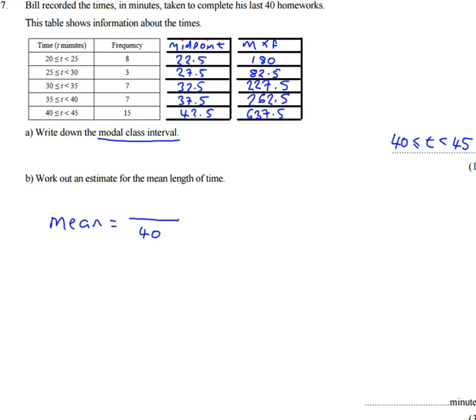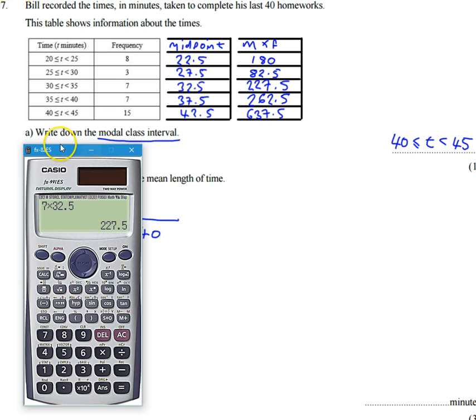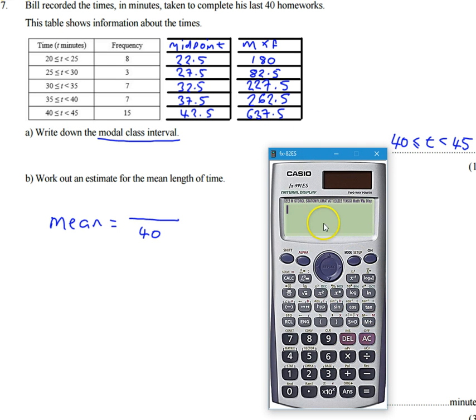So I now want to add all of these together. So I'll do that quickly now. So we've got 180 plus 82.5 plus 227.5 plus 262.5 plus 637.5. And that gives me 1390.